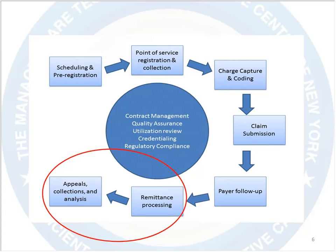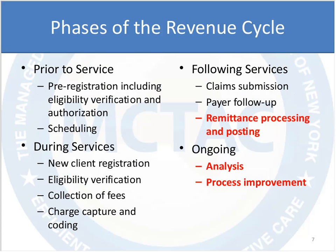This is the last piece of the revenue cycle management. The middle circle — covering contract management, quality assurance, utilization review, credentialing, and regulatory compliance — is an important component throughout the entire cycle. Another way to look at it is: what happens prior to the service, during the service, following the service, and what needs to be done on an ongoing basis. Today we focus on what happens following the service.